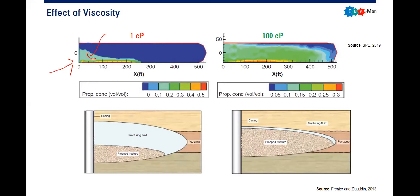The proppant will only concentrate and accumulate at the bottom, and everything in the upper zone will be empty. So you have very low conductivity in the upper zone, and conductivity will only be located at the bottom due to your proppant. The proppant will easily settle at the bottom of your fractures, giving you very low — if not zero — conductivity elsewhere. It will be useless if you use a low-viscosity fluid as your hydraulic fracturing fluid.